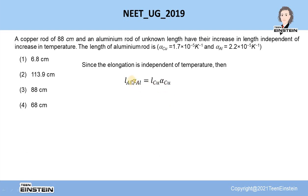Therefore, now if we solve for L subscript Al, that means the length for aluminum, then you can write L_Cu into linear expansion coefficient of copper divided by linear expansion coefficient of aluminum.